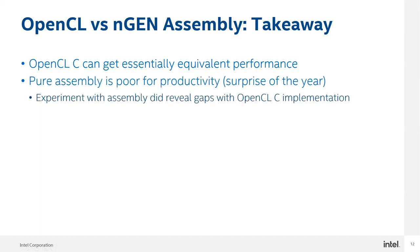Assembly is of course poor for productivity — no surprises there — but it was useful for revealing gaps in our implementation. It can be helpful to look at what the hardware supports at a low level, and then take the learning from that and figure out: we're not generating quite the right instructions in the OpenCL, and I need to modify things so that I get the correct instructions emitted.